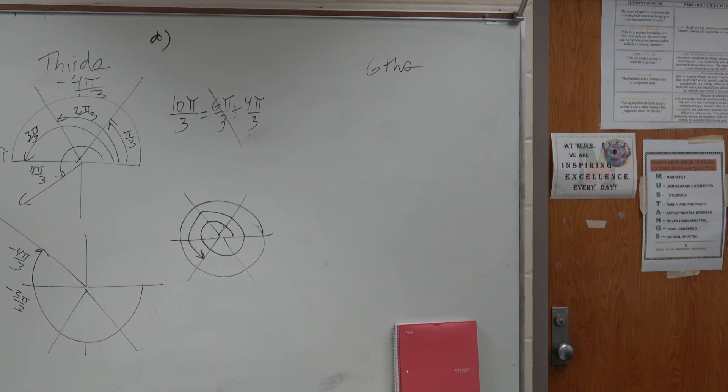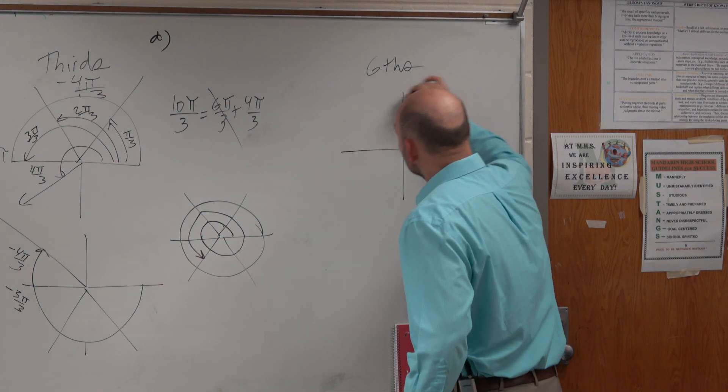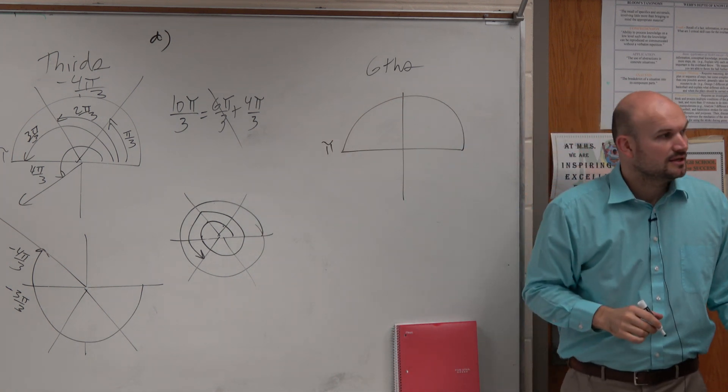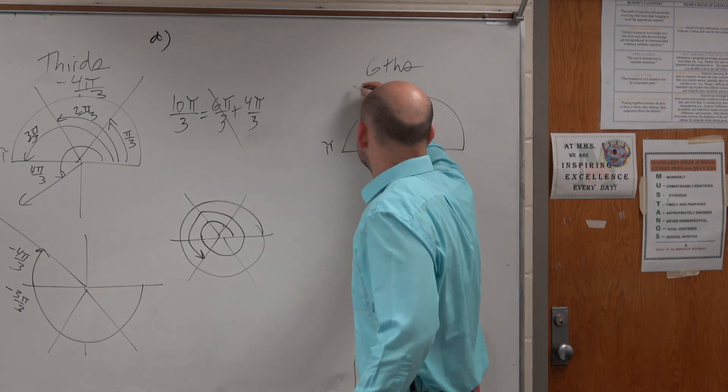All right. So on 6, so again, under the same idea, here to here is pi, right? So if we're talking about something in terms of 6, which I'm doing 13 pi over 6, I can break up pi into 6 parts, equal parts.